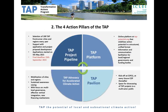If we have a closer look at the content of the program, the objectives of the TAP translate into four action pillars. First, the TAP project pipeline: the process by which every year up to 100 TAP projects are selected in the run-up to the COP and presented during the COP. During this process, cities and regions are mobilized to apply to the TAP. Be aware that the final deadline for submitting an application is the 15th of September 2015.